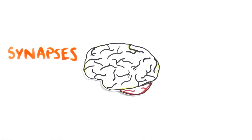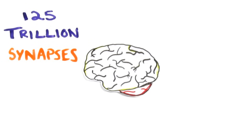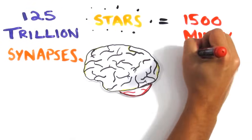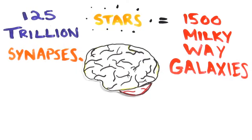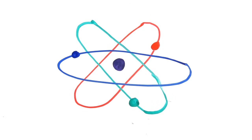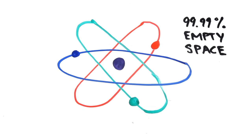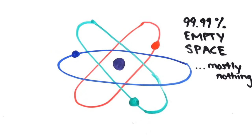And yet the number of synapses in your brain's cerebral cortex alone, about 125 trillion, is the amount of stars that would fill 1,500 Milky Way galaxies. But an atom is around 99.99% empty space, making everything in the universe mostly nothing.